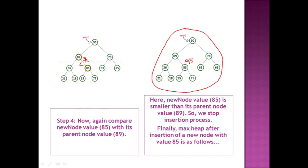If the new value were 95, we would first swap 89 and 95 since 89 is lesser than 95. Then compare 95 with the next parent — if that parent is also less, swap again. We continue until the max heap property is satisfied. This is the insertion operation — we keep swapping until it becomes a complete max heap.